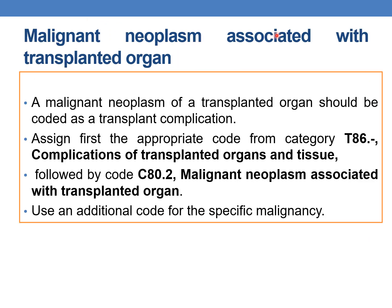Next guideline: malignant neoplasm associated with transplanted organ. A malignant neoplasm of a transplanted organ should be coded as a transplant complication. Assign PDX from category T86 (complications of transplanted organs and tissues), followed by C80.2 (malignant neoplasm associated with transplanted organ), and finally an additional code for the specific malignancy. Three codes must be used: T86 category code, then C80.2, then the specific malignancy code.